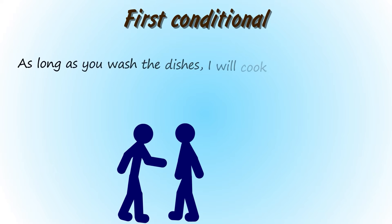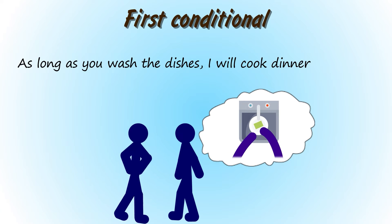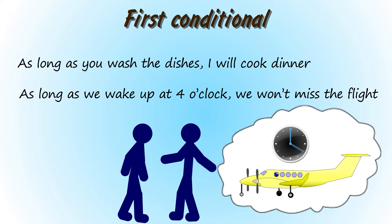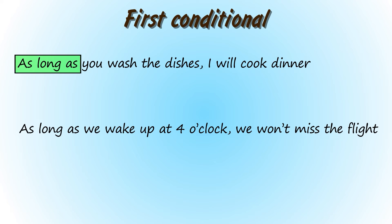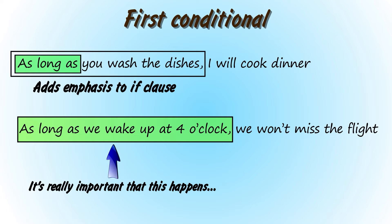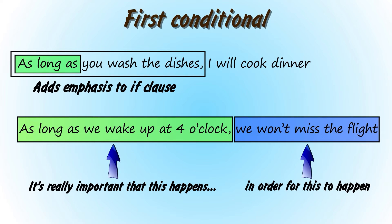Let's take a look at the first conditional. As long as you wash the dishes, I will cook dinner. As long as we wake up at four o'clock, we won't miss the flight. As long as can be used instead of if to add emphasis that the if clause needs to happen for the result to happen. Basically, we're saying it's really important that this happens in order for this to happen. Using if still means the same thing, there's just less emphasis on the importance of the condition.